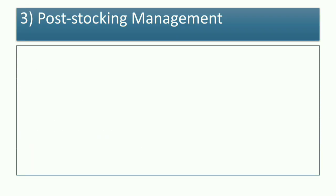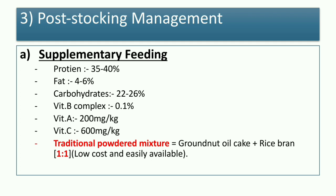For post-stocking management, supplementary feed should contain: protein 35–40%, fat 4–6%, carbohydrates 22–26%, Vitamin B complex 0.1%, Vitamin A 200 mg/kg, and Vitamin C 600 mg/kg. The traditional powder mixture used in carp culture is groundnut oil cake plus rice bran in 1:1 ratio, which is easily available and low cost.